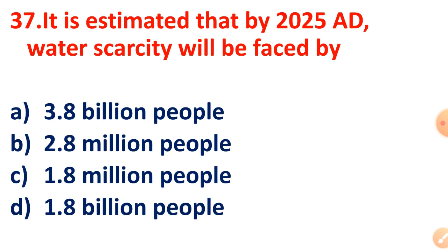Question 37: It is estimated that by 2025 AD, water scarcity will be faced by how many people? The correct answer is 1.8 billion people — you have to remember this.